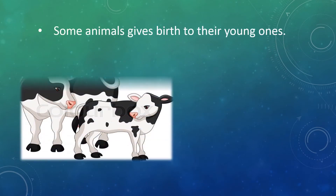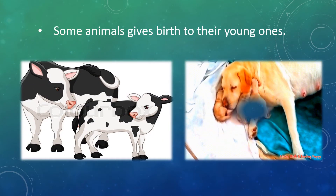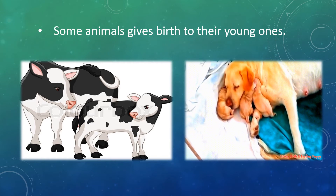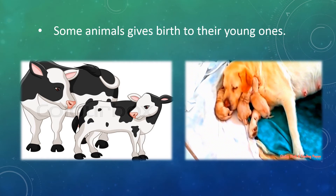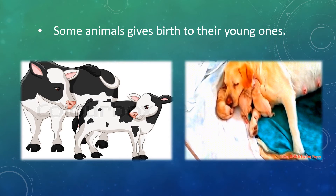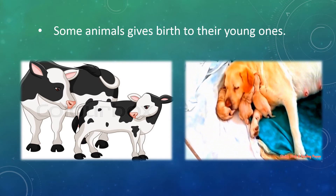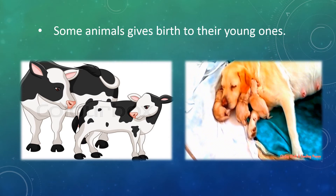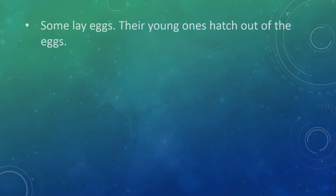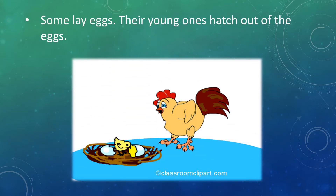Some animals give birth to their young ones. For example, a cow gives birth to a calf, and a dog gives birth to puppies. Some animals lay eggs, and their young ones hatch out of the egg.